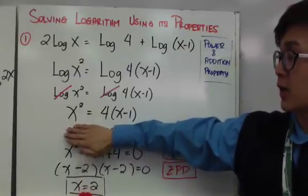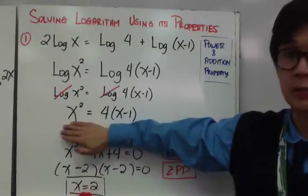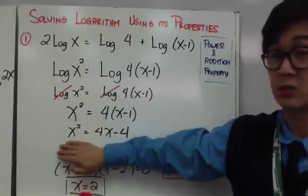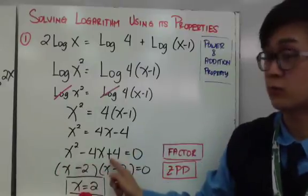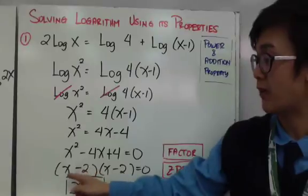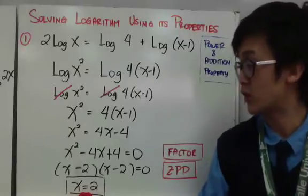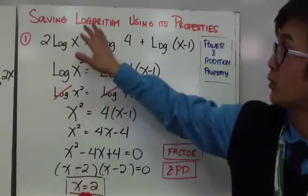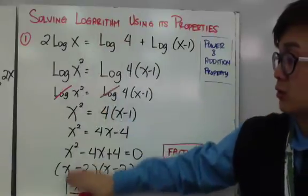The equation x squared equals 4 times x minus 1 is a quadratic equation. Distributing 4 to x minus 1 gives x squared equal to 4x minus 4. Equating to zero, we get x squared minus 4x plus 4 equal to 0, which is factorable as x minus 2 times x minus 2. Using the zero product property, x equals positive 2. This shows how we use the properties of logarithm to simplify the equation and solve for x.